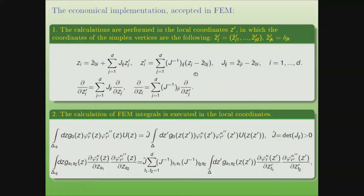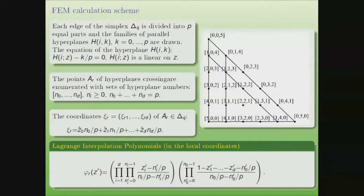For the construction of multidimensional Hermite interpolation polynomials, we use the following economical implementations accepted in the finite element method. All calculations are performed in local or barycentric coordinates, and all integrals of the finite element method are evaluated in local coordinates too. In contrast to the one-dimensional case, the interpolation polynomials in the multidimensional case are calculated by solving a system of algebraic linear equations, not in analytical form.